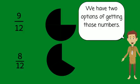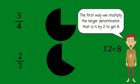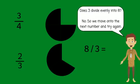In the fractions 3-4ths and 2-3rds, we have two options. The first is to multiply the larger denominator 4 by 2 to get 8. Then ask yourself, does 3 divide evenly into 8? And the answer is no.